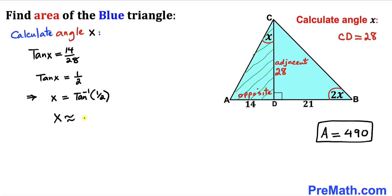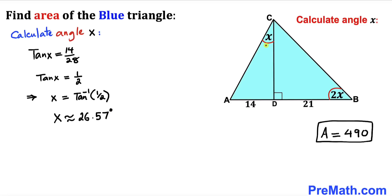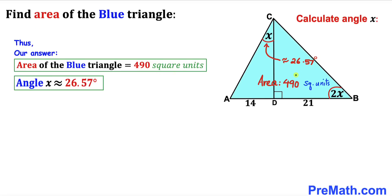Using a calculator, angle x is approximately equal to 26.57 degrees. So the area of the blue shaded triangle ABC is 490 square units, and angle x is approximately 26.57 degrees. Thanks for watching — please don't forget to subscribe for more exciting videos!